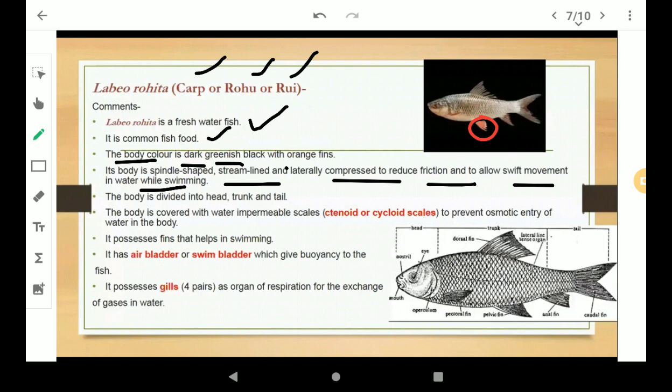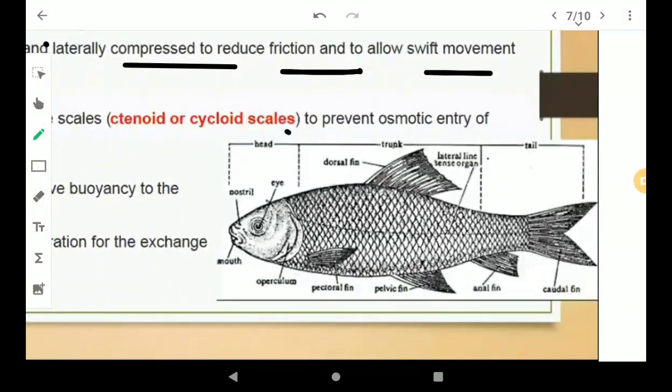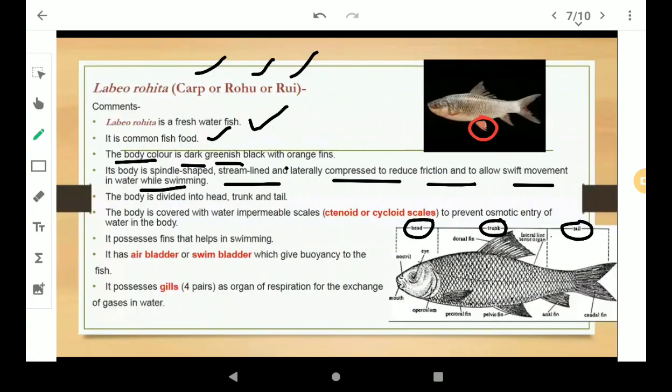The body is divided into three parts. Here you can observe head, trunk and tail. The body is covered with water impermeable scales known as ctenoid or cycloid scales to prevent osmotic entry of water into the body.